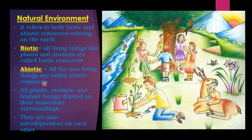These are all non-living things, but very much needed for human. Man needs them. Therefore, all plants, animals, and human beings depend on their immediate surroundings — immediate surroundings like buildings, roads, industries, and all the surroundings around.